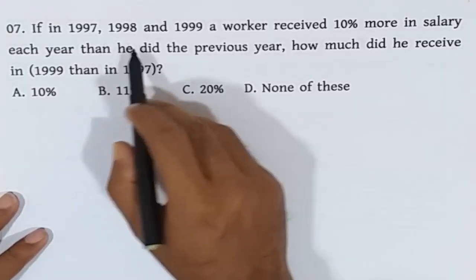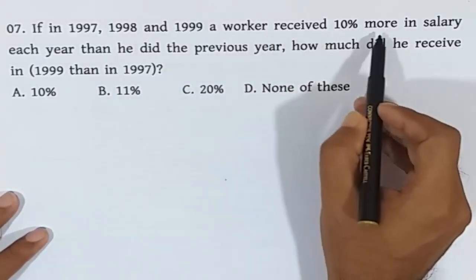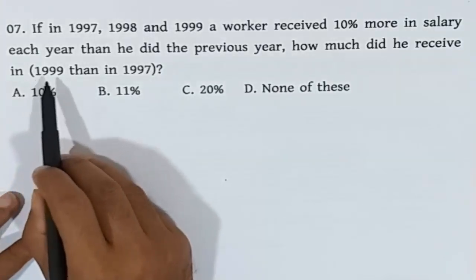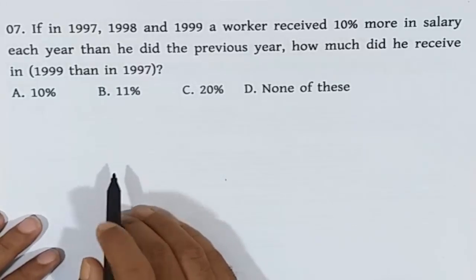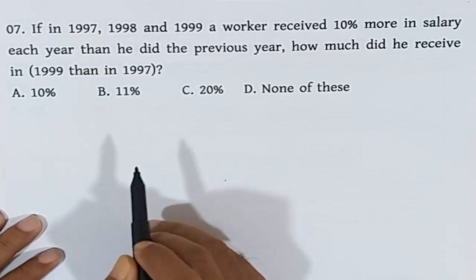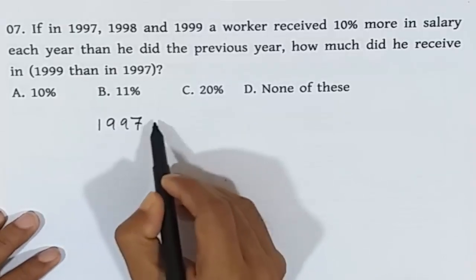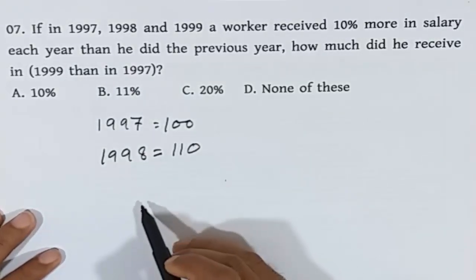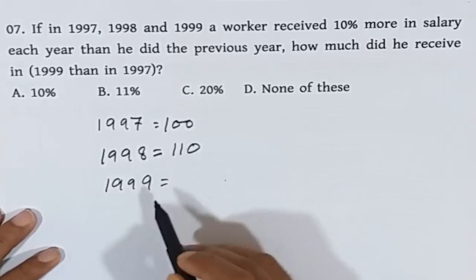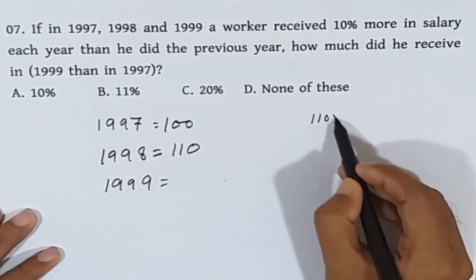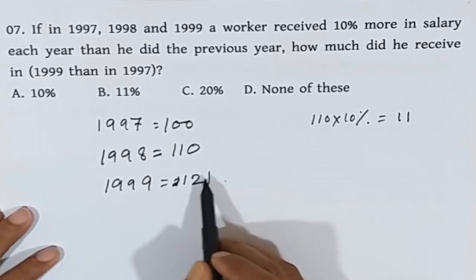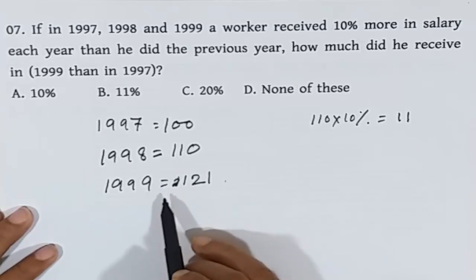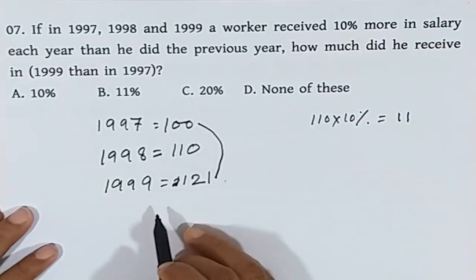If in 1997, 1998, and 1999 a worker received 10% more in salary each year than the previous year, how much more did he receive in 1999 than in 1997? Starting from a base, 10% increase gives 110%, and a further 10% gives 121%. So he received 21% more in 1999 than in 1997. The answer is option D, 21%.